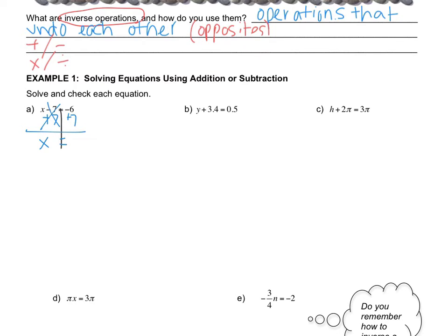And then negative 6 plus 7 is 1. So my solution here is 1. Now when you have an equation, you have an instant answer key. The way that you have the instant answer key is by checking. So you want to rewrite the equation. But instead of x, we can put what we think x is. So I'll write 1 minus 7 equals negative 6. So you do the math over here and you say, what is 1 minus 7? 1 minus 7 is negative 6. So you show that you got the same thing on both sides of the equation. And you put a little check mark or a smiley face or whatever you want to do to show that you got the same thing on both sides.